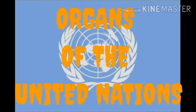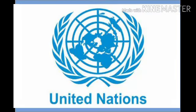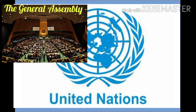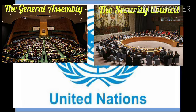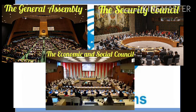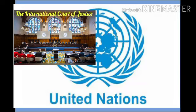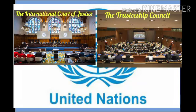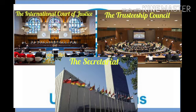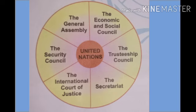Now let's learn about the organs of the United Nations. The main organs of the United Nations are: the General Assembly, the Security Council, the Economic and Social Council, the International Court of Justice, the Trusteeship Council, and the Secretariat. Let us study in detail the working and responsibilities of these organs.